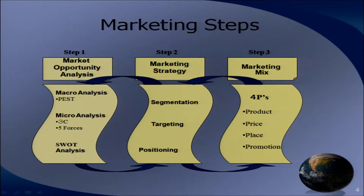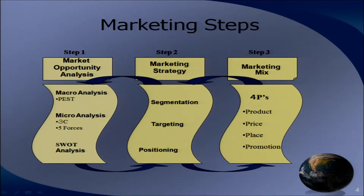Then, on a more micro level, you have other tools, like 3C, which is pretty popular in Japan and Asia. It's the company, customer and competitors. And then the five forces, which include all the different forces that are acting on the company, including the customer, the substitutes, the various competitors and also the suppliers.